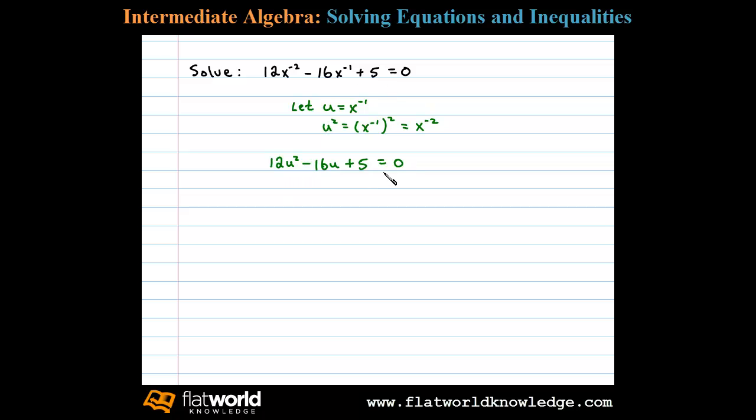This quadratic expression here factors. We'll factor 6u squared as 6u times 2u, and we'll factor 5 as 5 times 1. Placing the 5 here and the 1 there, we can see the inner product will be 10u and the outer product will be 6u. 10u and 6u add up to negative 16u if they're both negative, and then negative 5 times negative 1 is positive 5.